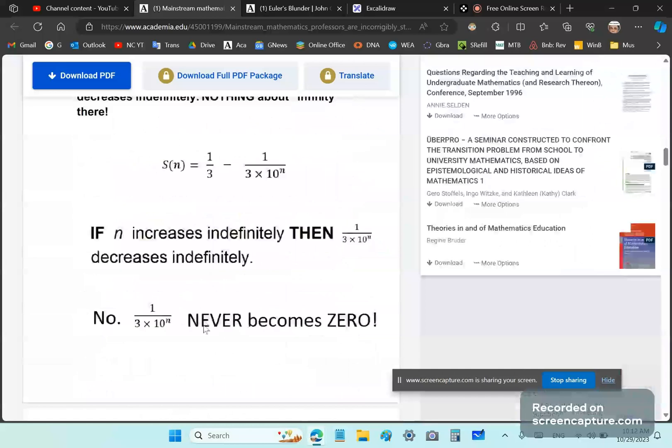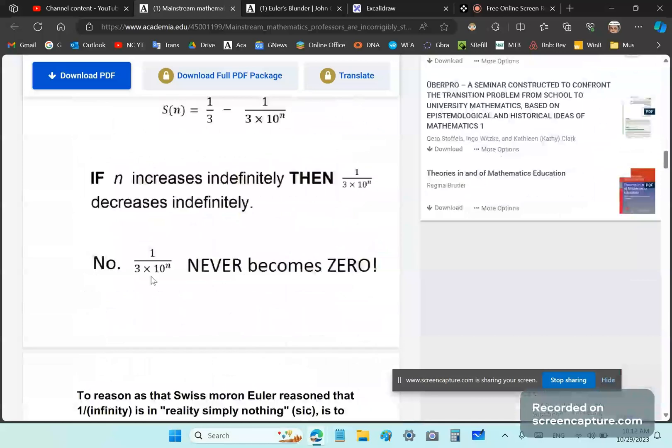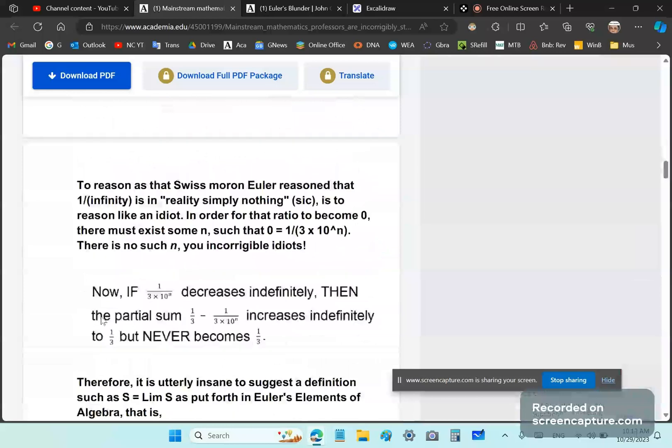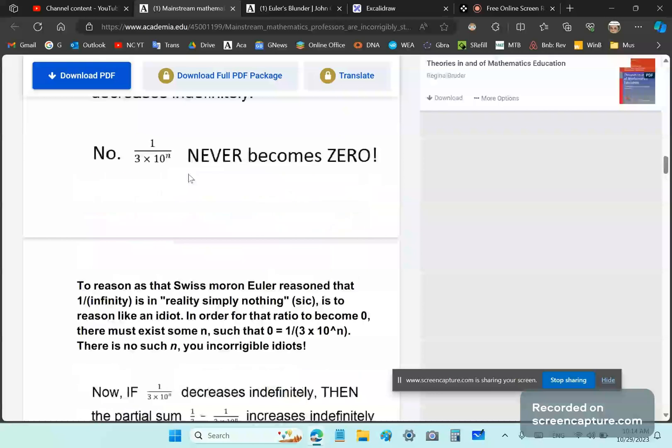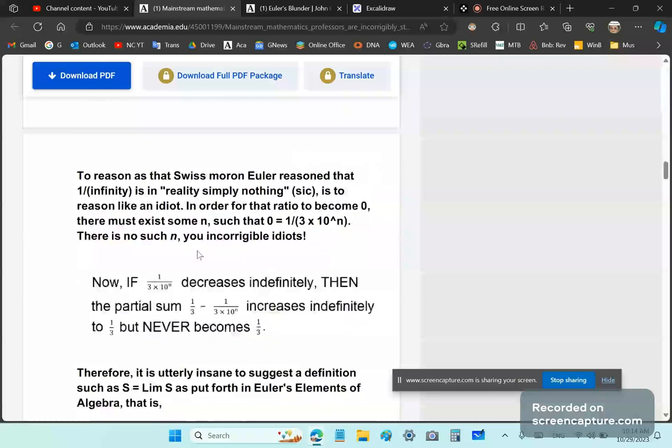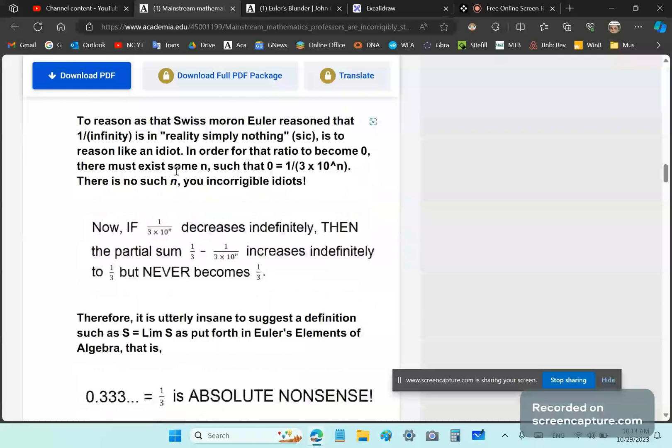But this never becomes 0. It's impossible for it to become 0 because if you say that, then you're claiming that there is an n such that this here is equal to 0. That's moronic. So to reason as that Swiss moron Euler reasoned, that one of the infinities in reality is simply nothing, is to reason like an idiot.